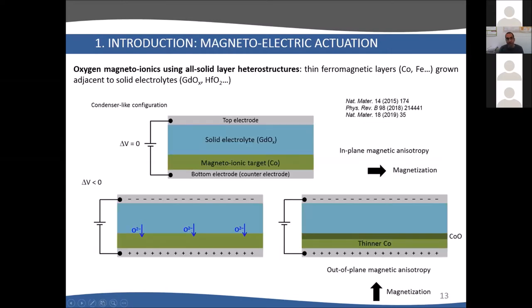Here you have some examples from literature. The idea is that depending on the voltage polarity, you will move the anions from the electrolyte to the target material or vice versa. A simple example could be the change in the orientation of a cobalt thin layer in contact with gadolinium oxide, an example of solid electrolyte.